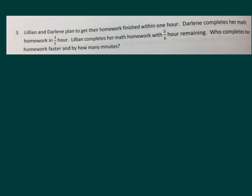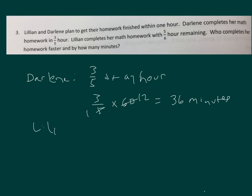So we have Darlene, who finished her homework in 3/5 of an hour. 3/5 of an hour is 3/5 of 60. Lillian has 5/6 of an hour remaining.